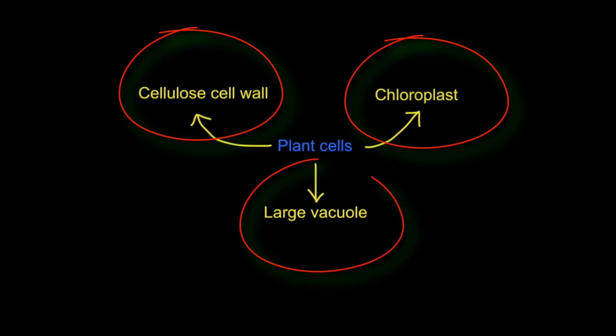Plant cells also have a large vacuole, whereas animal cells contain only small vacuoles.